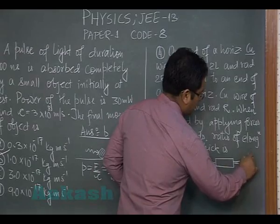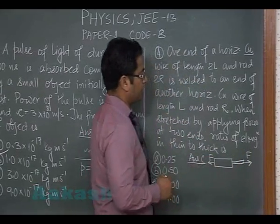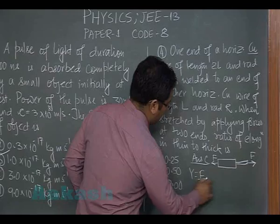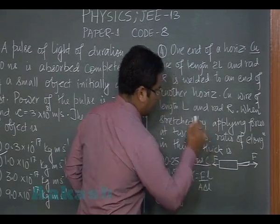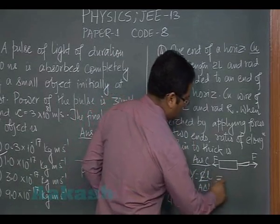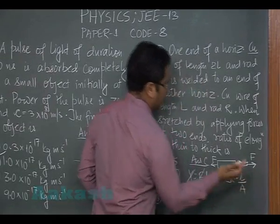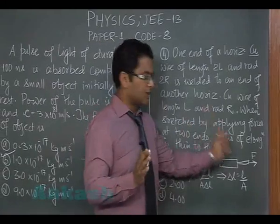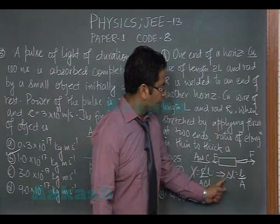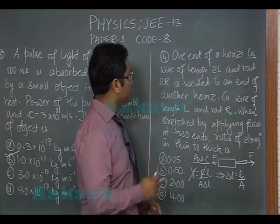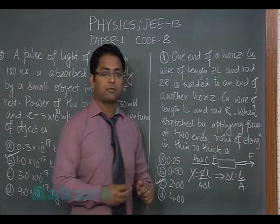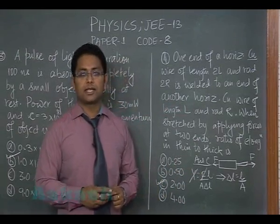The force F applied is the same for both wires. Using Y = (F/A)/(δl/l), we get δl = F·l/(Y·A), so δl is proportional to l/A. For the thin wire, length is L and area is A (radius r). For the thick wire, length is 2L and area is 4A (radius 2r). Taking the ratio of thin to thick elongation leads to option C.